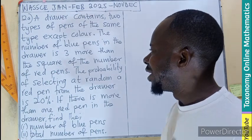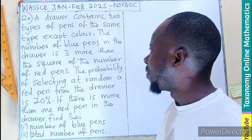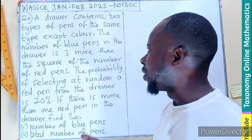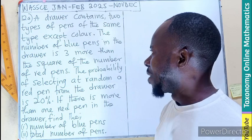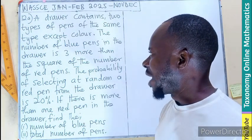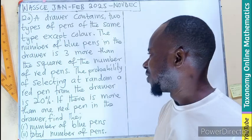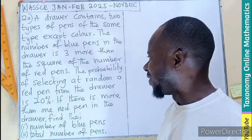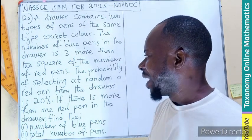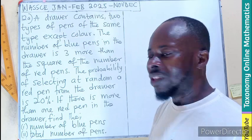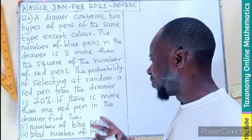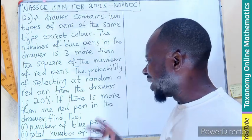A drawer contains two types of pens of the same type except color. The number of blue pens in the drawer is three more than the square of the number of red pens. The probability of selecting at random a red pen from the drawer is 20%.